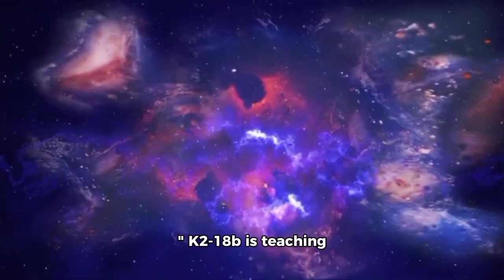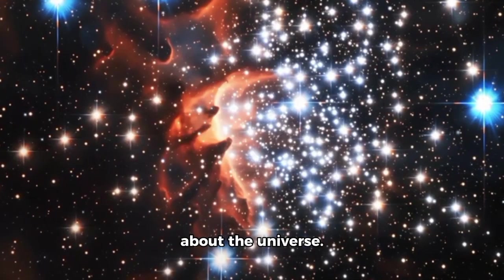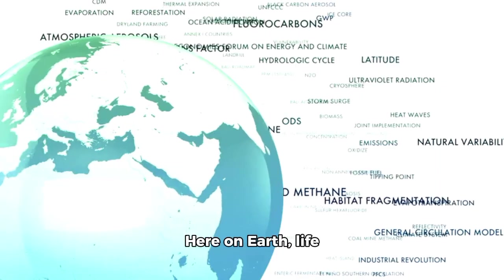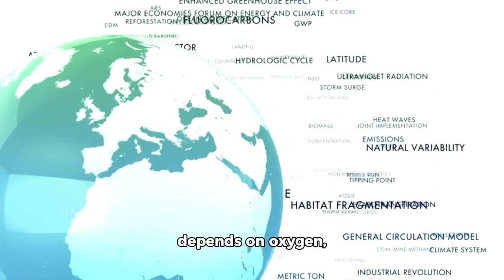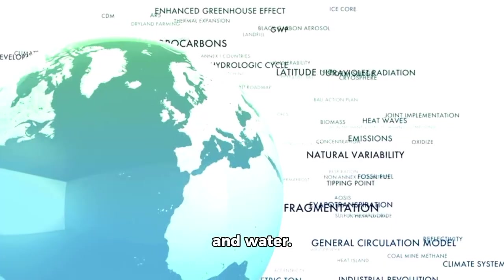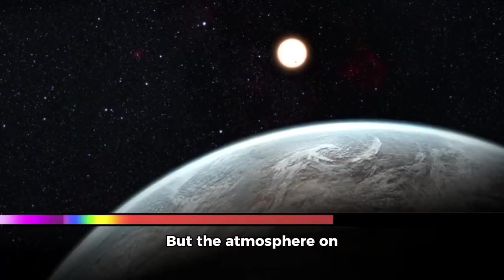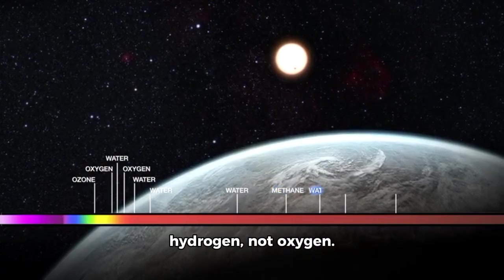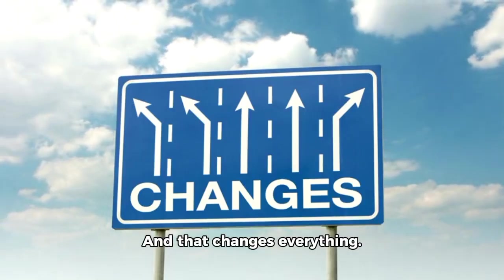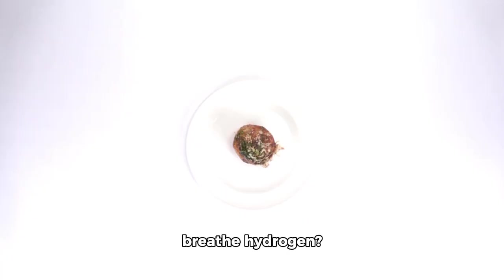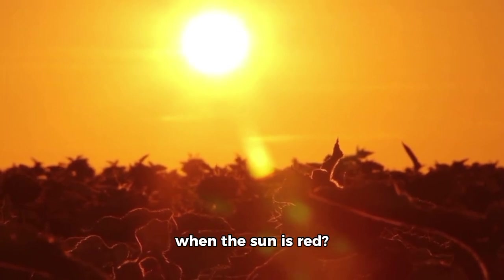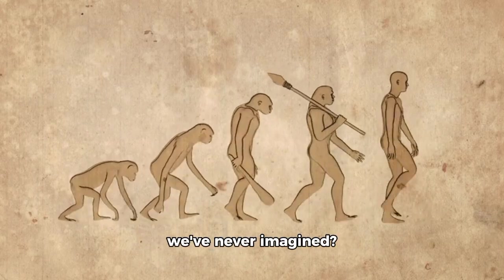K-18b is teaching us more than just about the universe. It's forcing us to rewrite biology itself. Here on Earth, life depends on oxygen, carbon, nitrogen, and water. But the atmosphere on K-18b is full of hydrogen, not oxygen. And that changes everything. Could organisms there breathe hydrogen? Is photosynthesis possible when the sun is red? Can evolution follow a path we've never imagined?